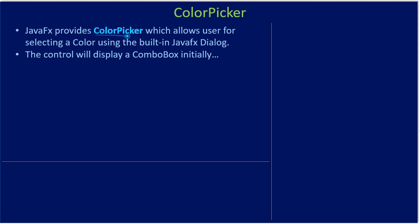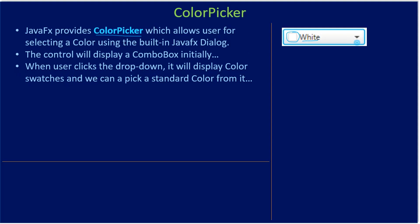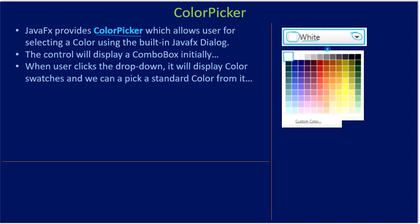The color picker control will initially display a combo box. When you add the color picker to a container, what is displayed is a combo box, and by default a white color is shown in the combo box display area. When the user clicks the drop-down, it will display color swatches and we can pick a standard color from it. Each rectangle or square here denotes one color swatch, and each color swatch represents a standard color.